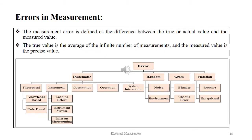The next discussion is errors in measurement. Measurement error is defined as the difference between the true or actual value and the measured value. The true value is the average of an infinite number of measurements and the measured value is any precise value at a particular point. Errors are classified as systematic error, random error, gross error and violations. Systematic errors are further classified into theoretical, instrument, observation, operation and system interaction. Theoretical errors are categorized as knowledge-based and rule-based. Instrument errors include loading effect, instrument misuse and inherent shortcoming. Random errors are noise and environment. Gross errors are blunder and chaotic error. Violations are routine and exceptional.